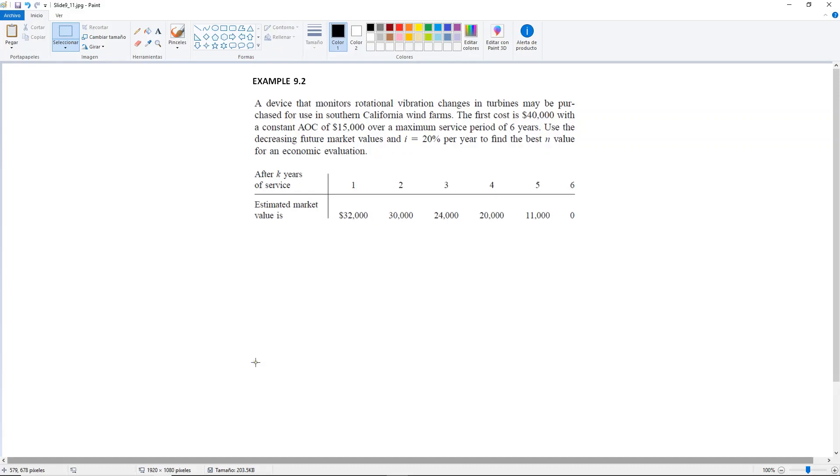Example 9.2. A device that monitors rotational vibration changes in turbines may be purchased for use in Southern California wind farms.